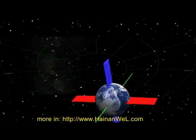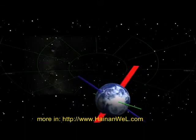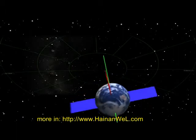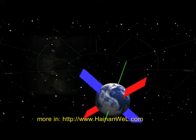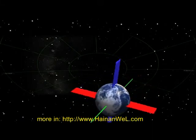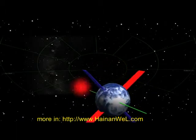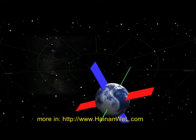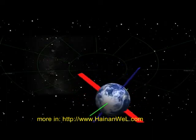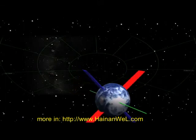One result of this is that the North Star changes over time. Right now, the Earth's axis points towards Polaris. 5,000 years ago, the axis pointed to a star in the constellation Draco. And 12,000 years ago, the brilliant star Vega was the pole star. And because of the 26,000-year cycle, Vega will be the pole star again in 14,000 years.